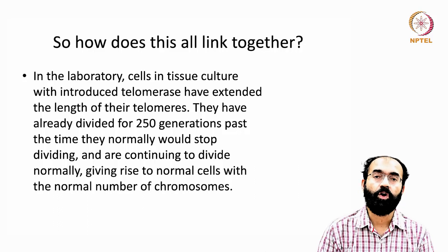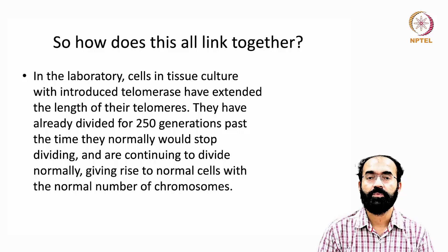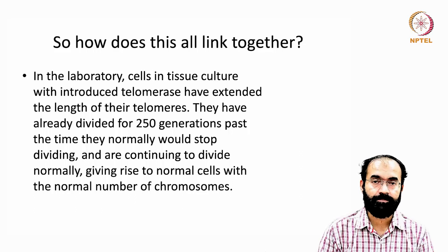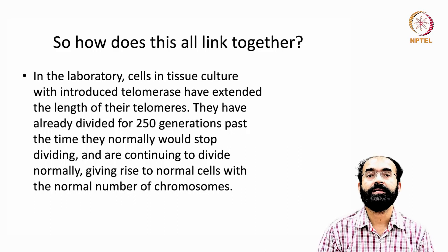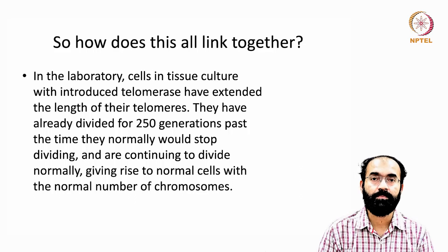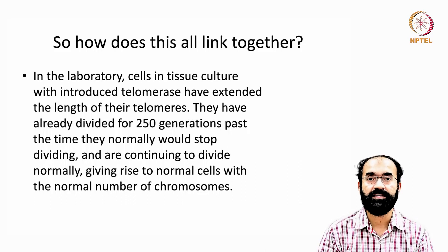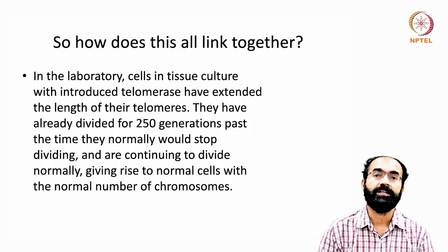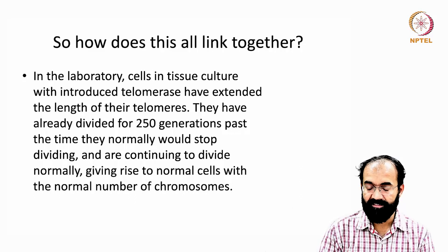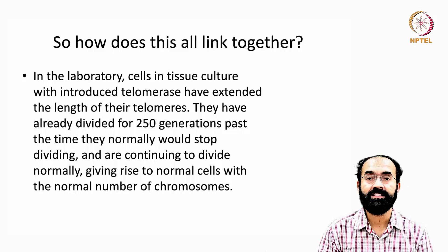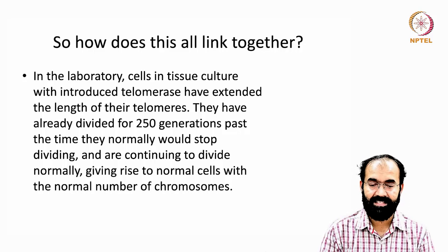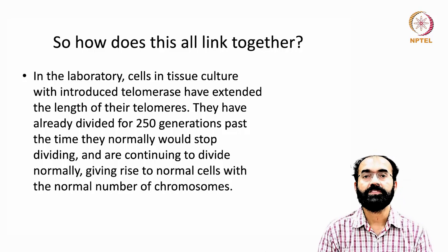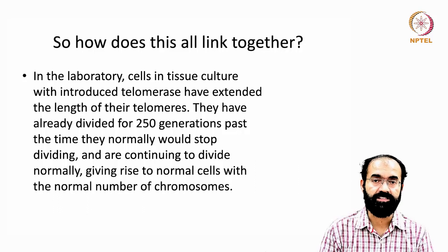For a normal cell, if you want to maintain it in an actively proliferating state, you need to have telomerase available; otherwise the cells will start showing signs of senescence, or signs of old age.